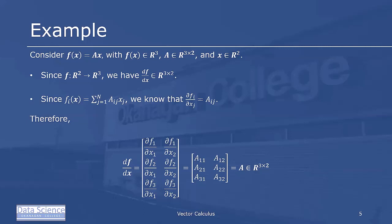Therefore, df dx is going to be the matrix df1 dx1, df1 dx2, df2 dx1, df2 dx2, df3 dx1, df3 dx2. Or since dfi dxj is equal to aij, it's really a11, a12, a21, a22, a31, a32. And so, in fact, it's equal to A, our 3 by 2 original matrix.